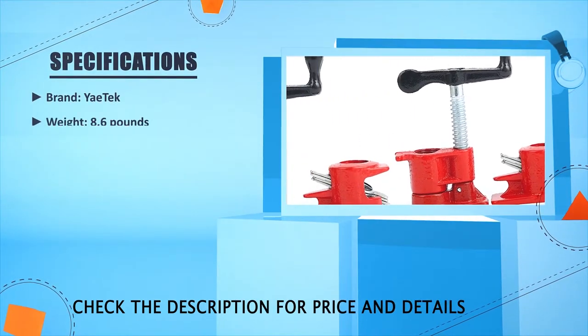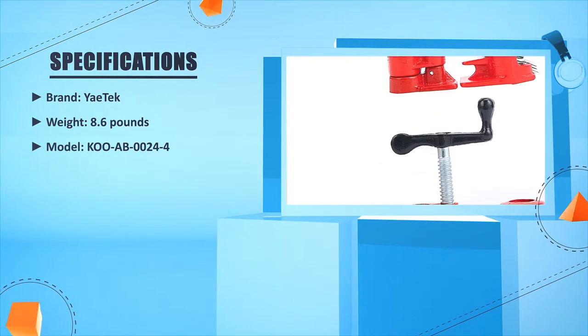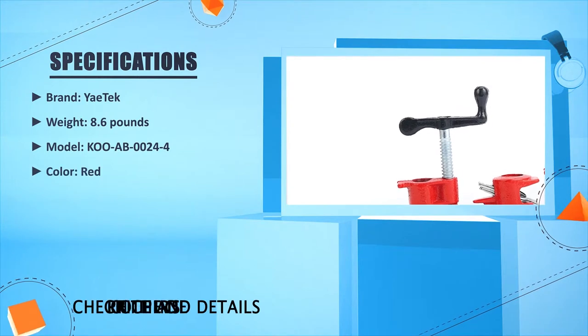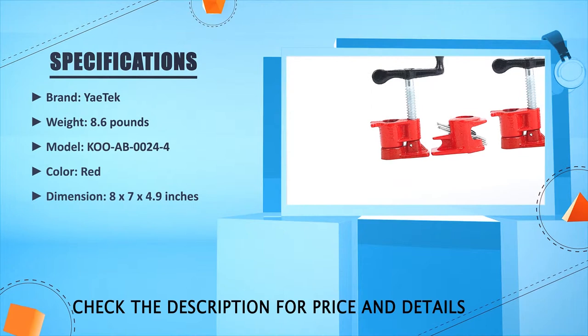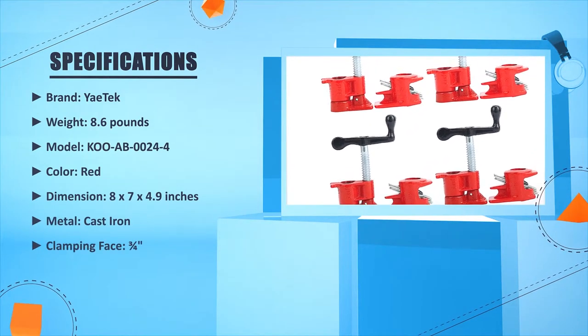Brand: Yake. Weight: 8.6 pounds. Model: KOOA B00244. Color: red. Dimension: 8 x 27 x 24.9 inches. Metal: cast iron. Clamping face: 3.0.